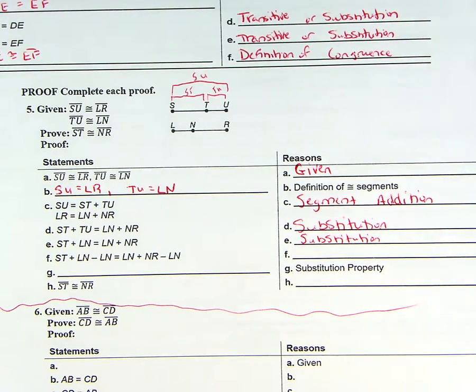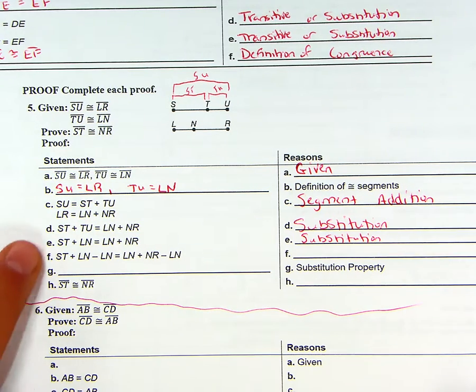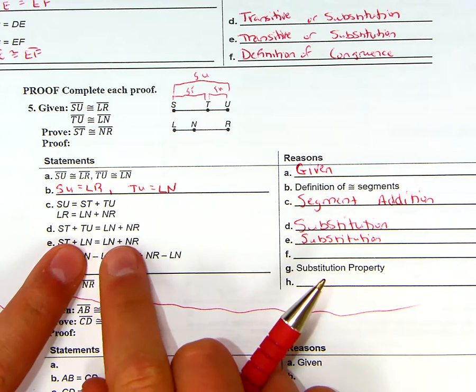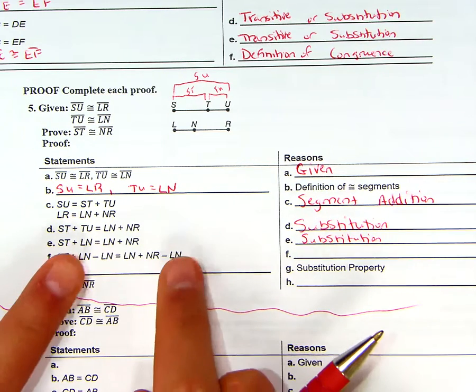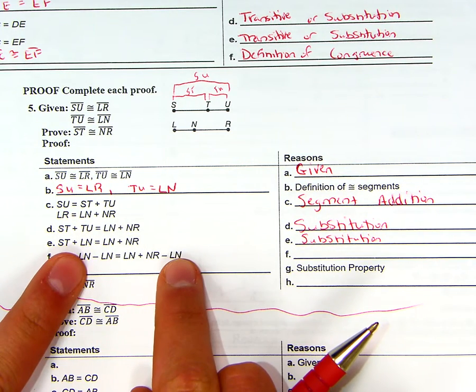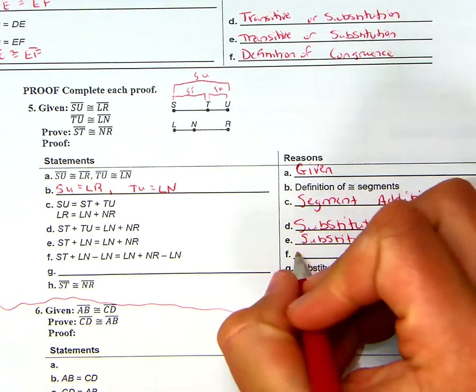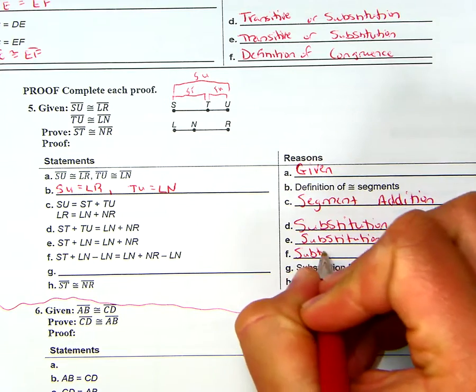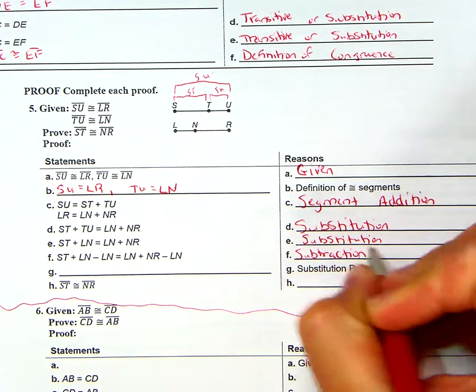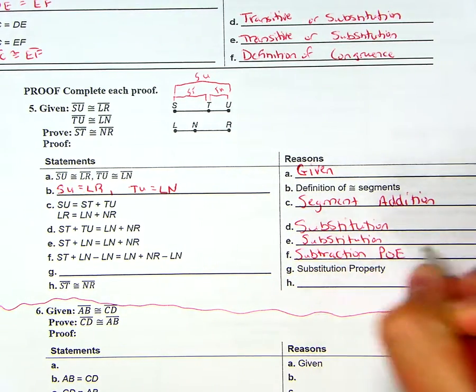What they're doing is they're setting up for this next move. This is a setup move for this one, because now since there's LN on both sides, we can subtract LN on both sides using the subtraction property of equality. I know there's no numbers here, but you can still subtract the same thing from both sides using the subtraction property of equality POE.